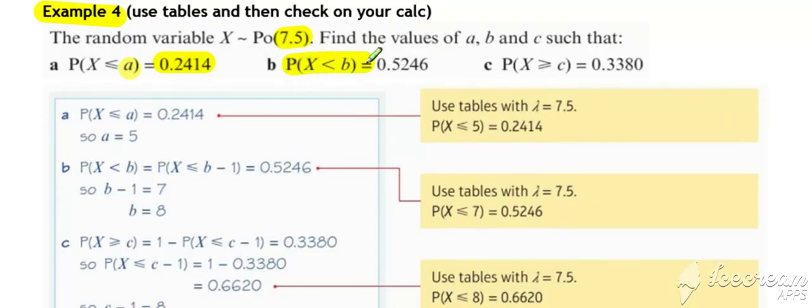In example b, it's not in the less than or equal to format, so we need to be a little bit careful. We need to appreciate that x being less than b is equivalent to x being less than or equal to b minus one.